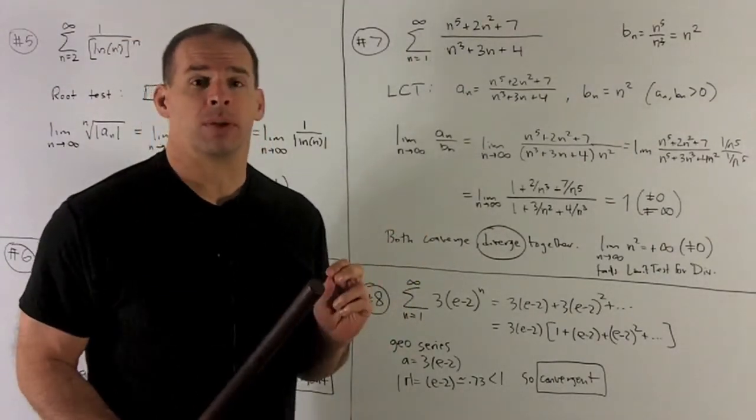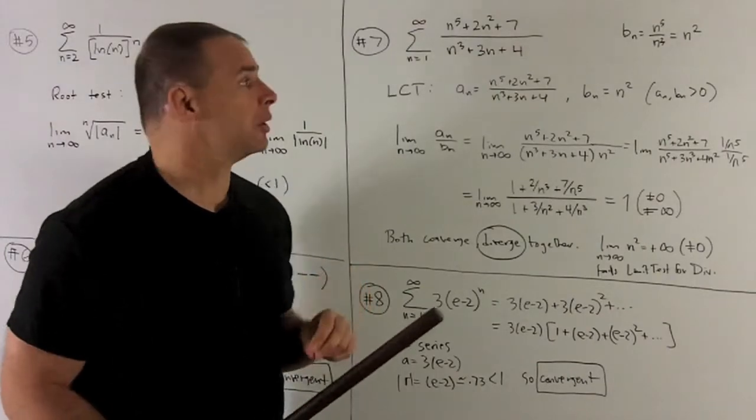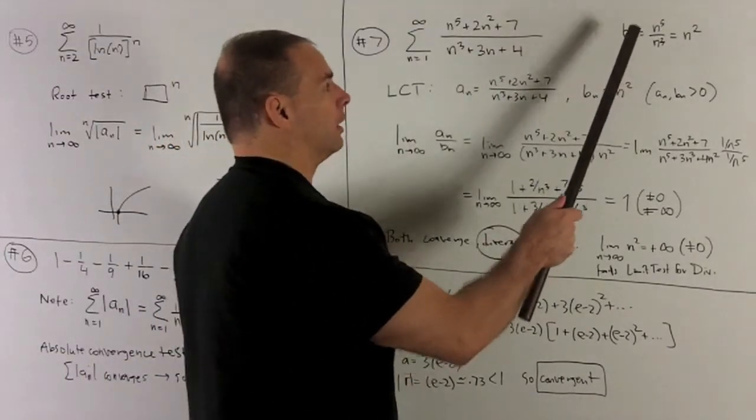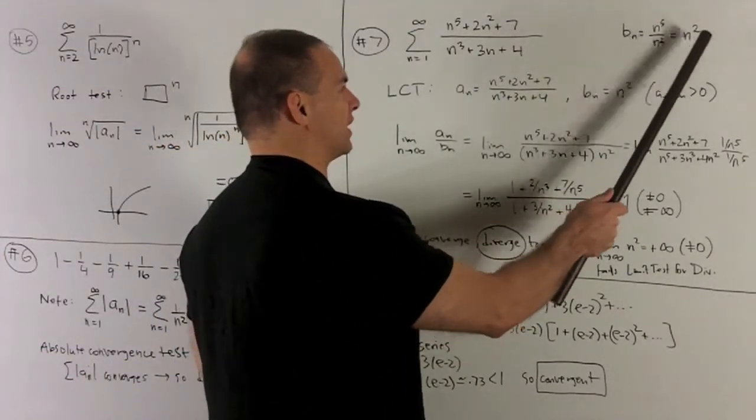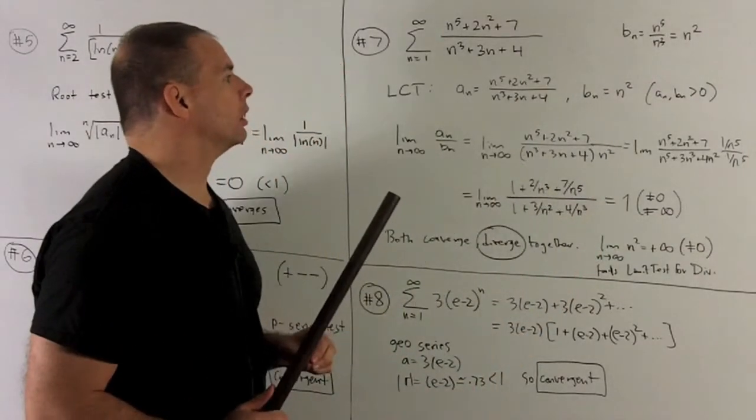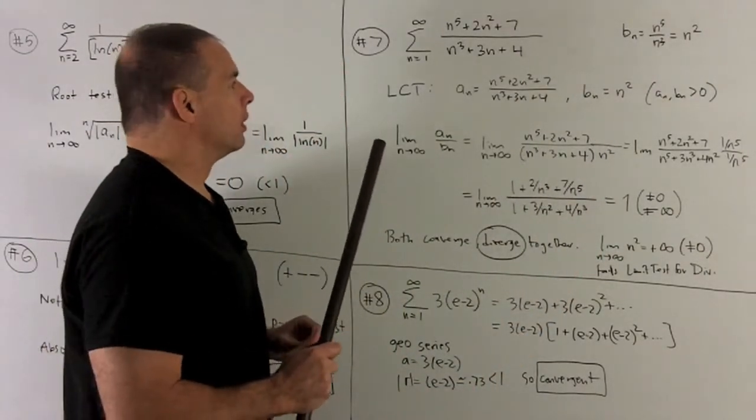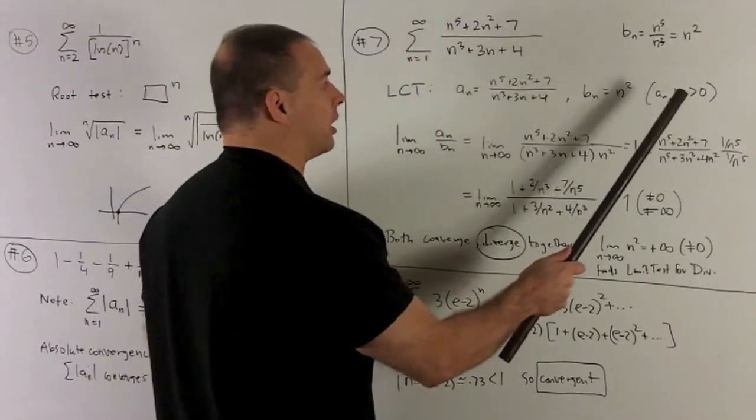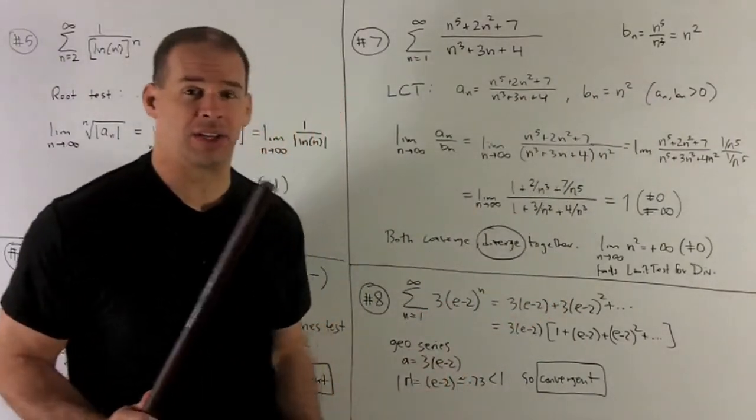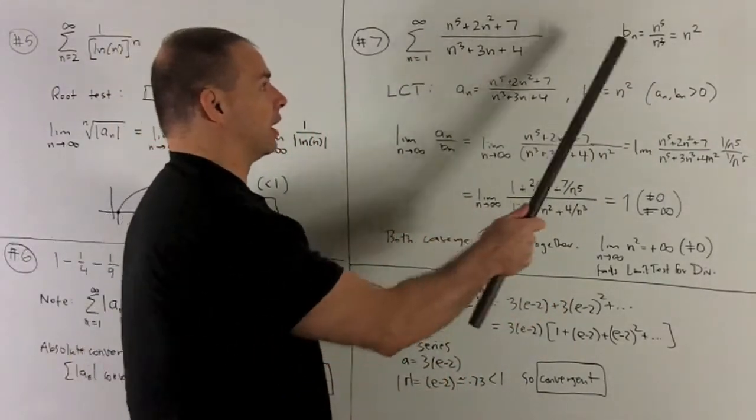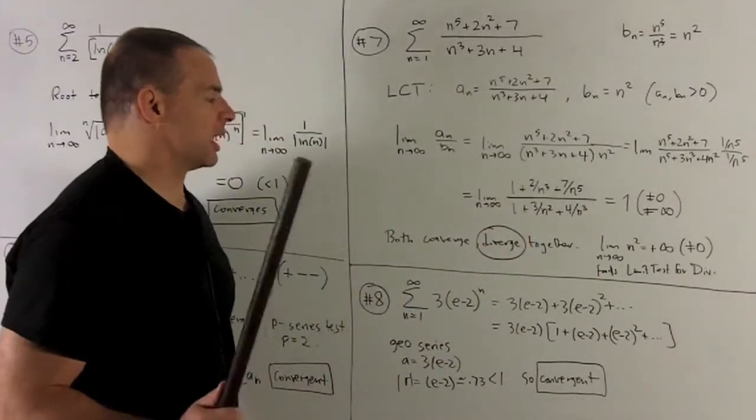So what we'll want to do is, we're going to use the limit comparison test with bn equal to n fifth over n cubed, which is n squared. Also note, for the limit comparison test, we'll need our an and our bn always positive, and that's going to be the case here.